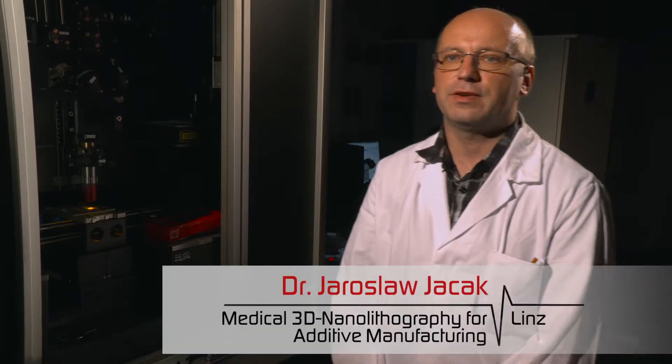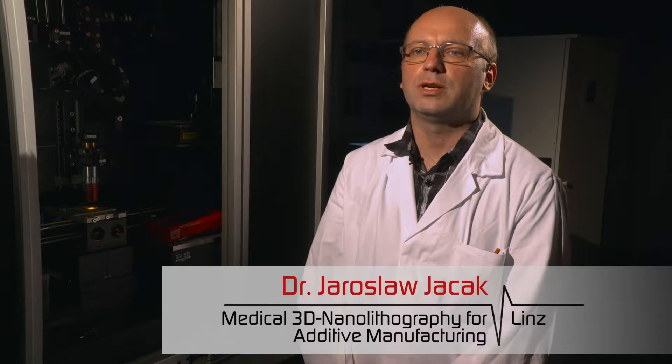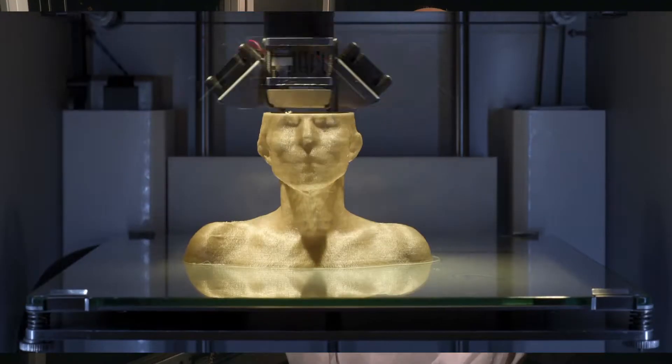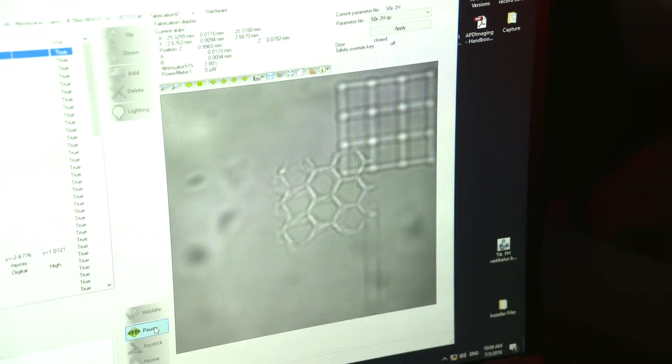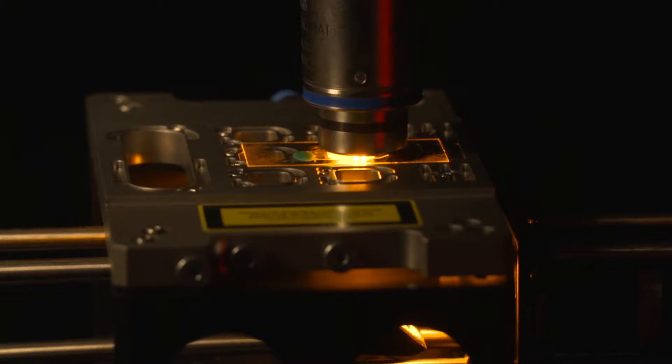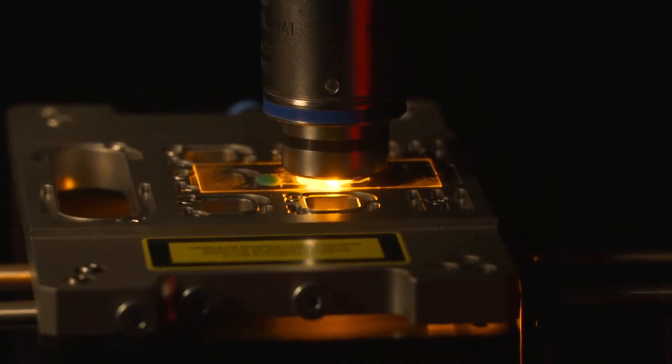3D nanolithography can be imagined as a fast, high-precision 3D printing process for really tiny objects. Through a focused laser beam, we get a special liquid called photographic lacquer to harden. The hardening process takes place in a space many times smaller than the diameter of a human hair.